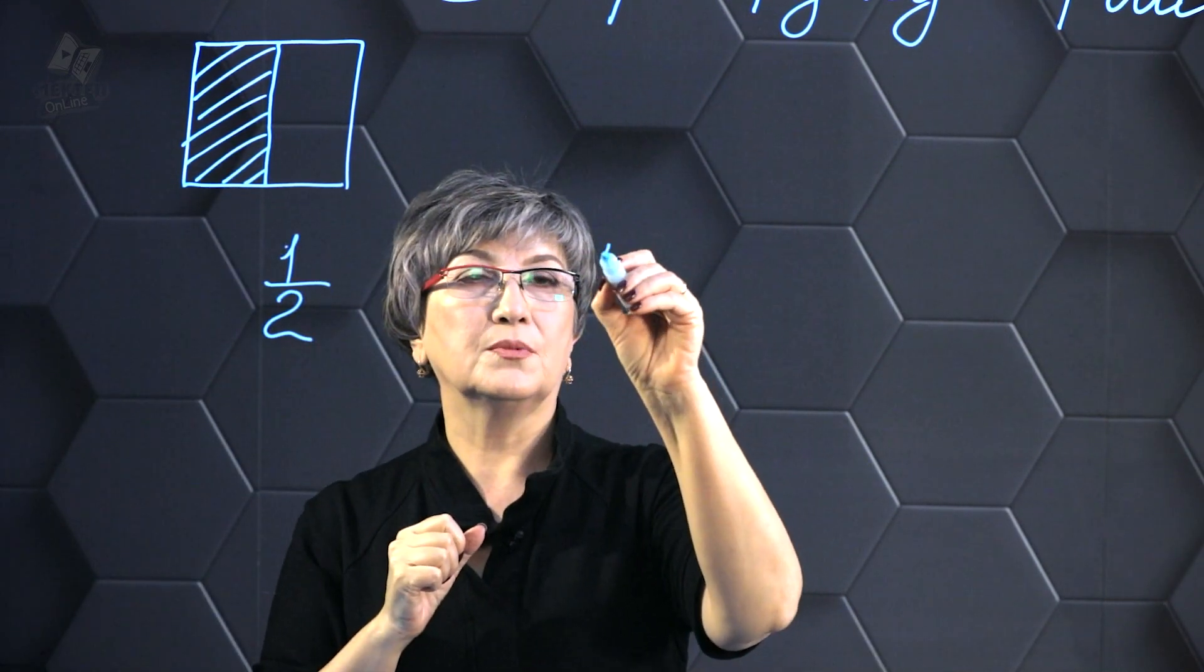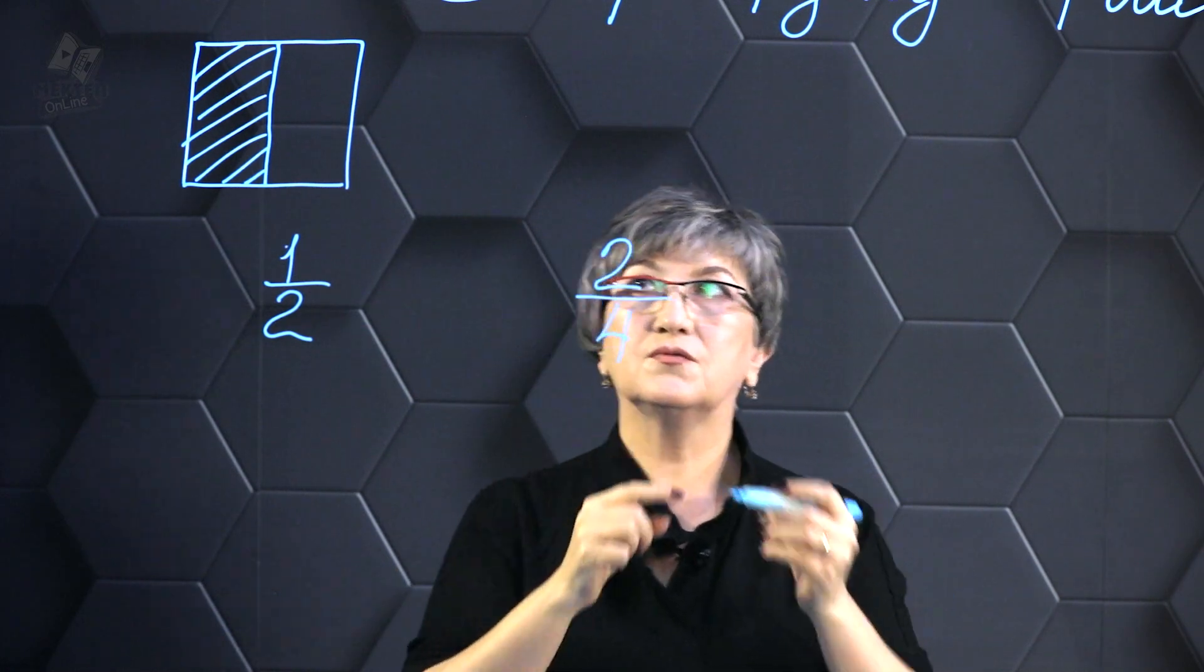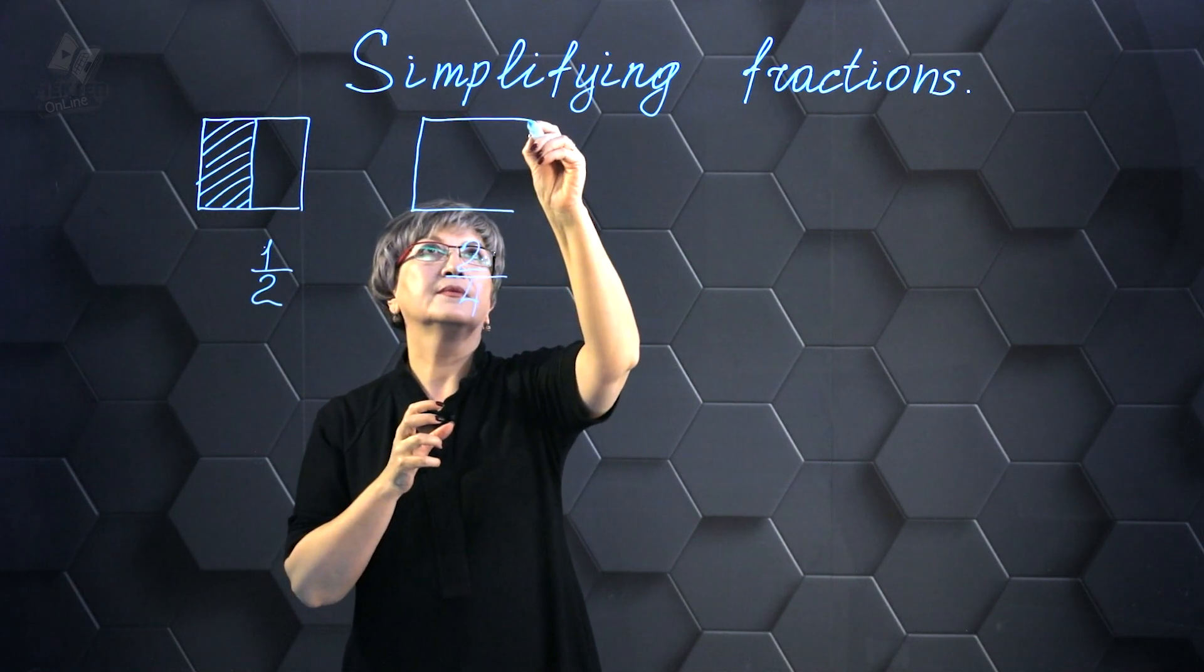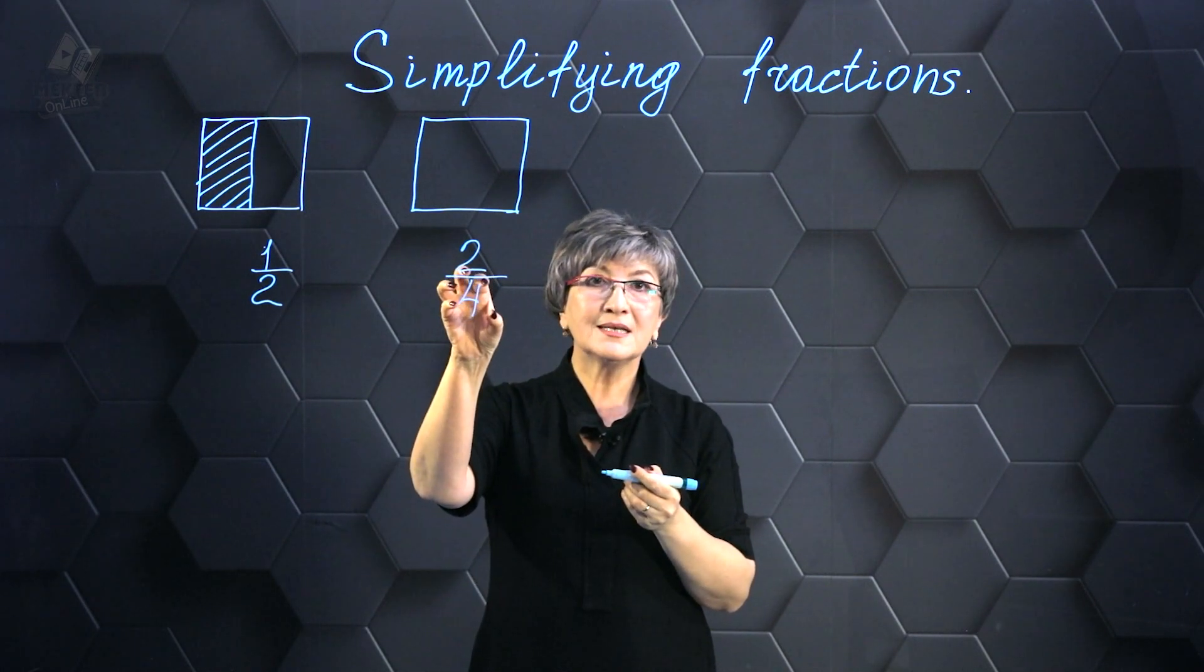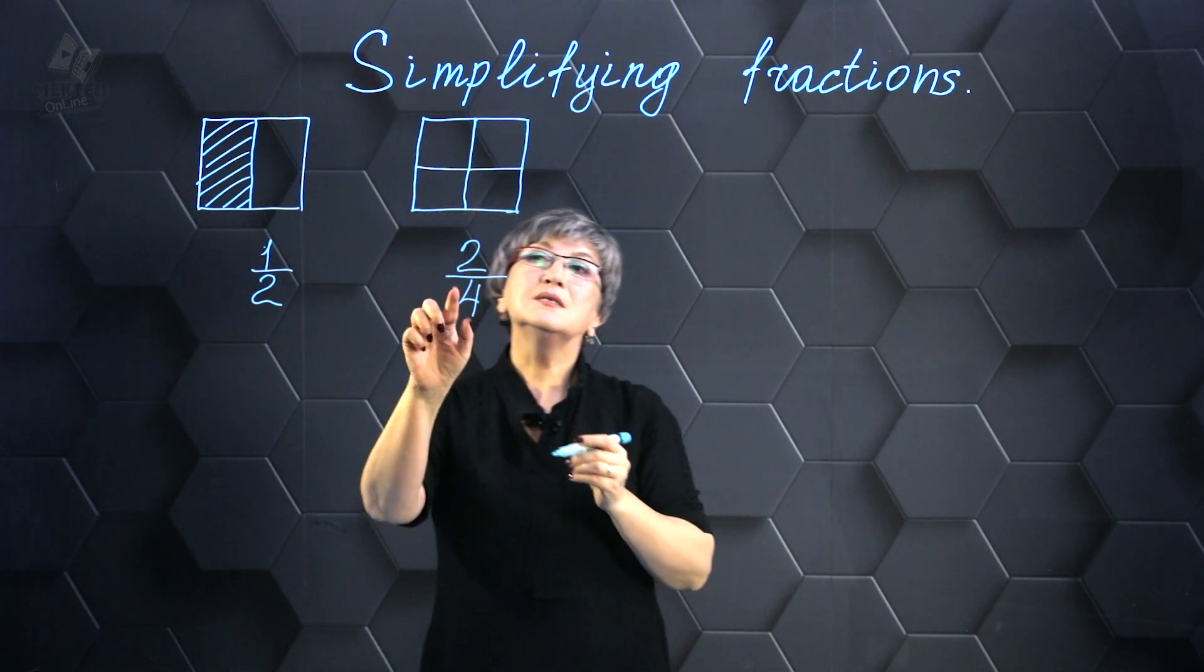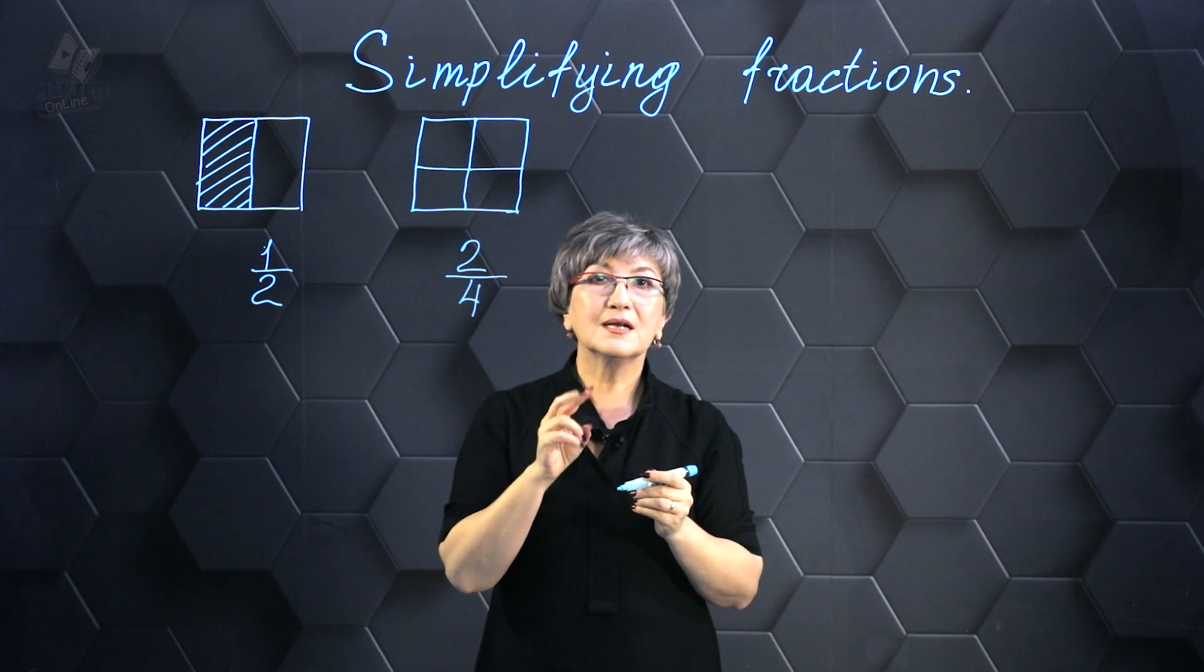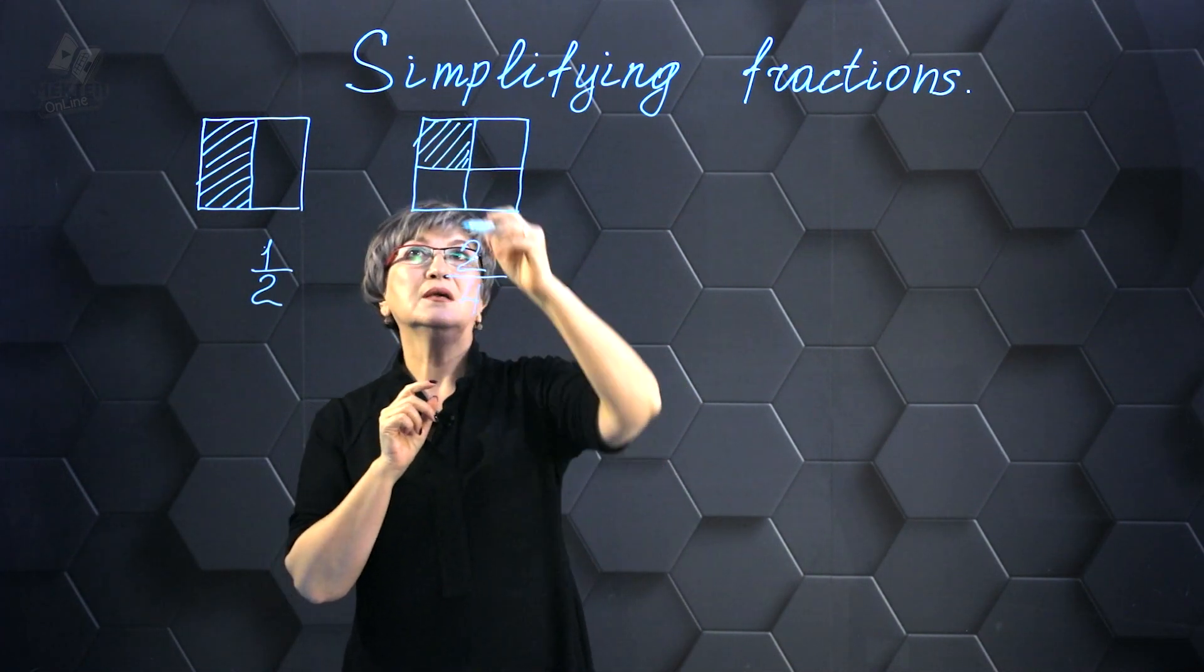And now I want to depict the fraction 2/4, two fourths. In the same manner I will take the same square and represent the fraction 2/4. I draw this square. And now how many parts do I divide it into? I pay attention to the denominator and divide it into four parts. Now I need to show two parts out of four parts, so I simply color two squares.